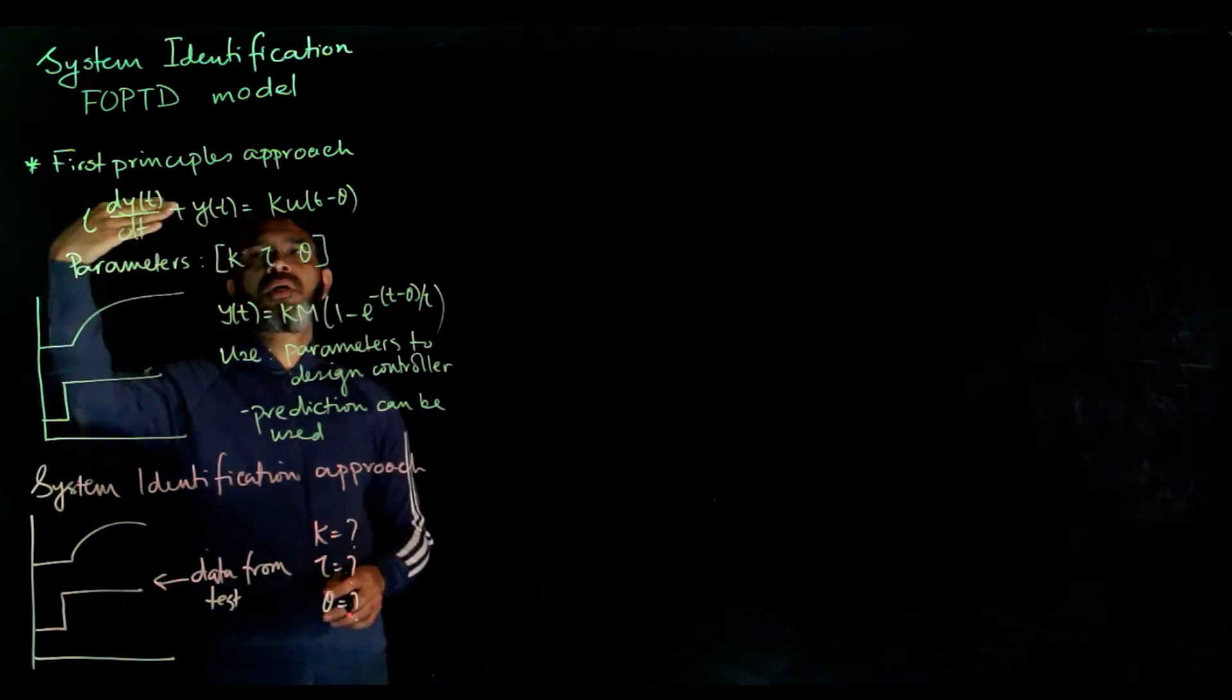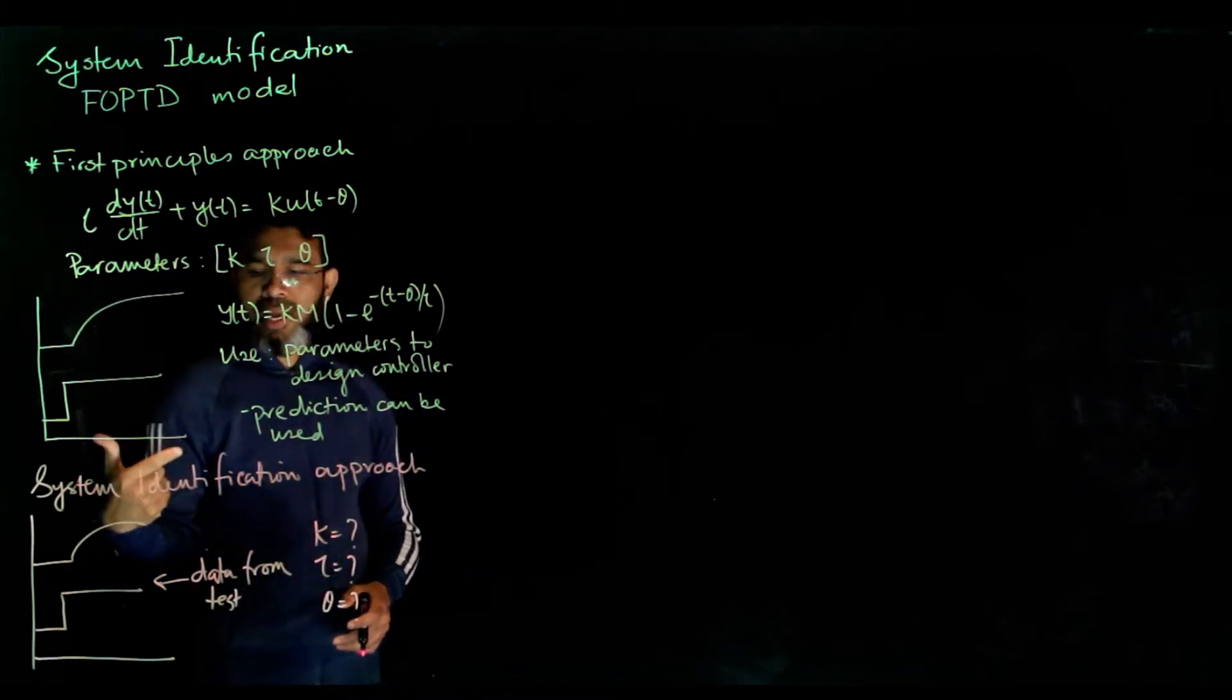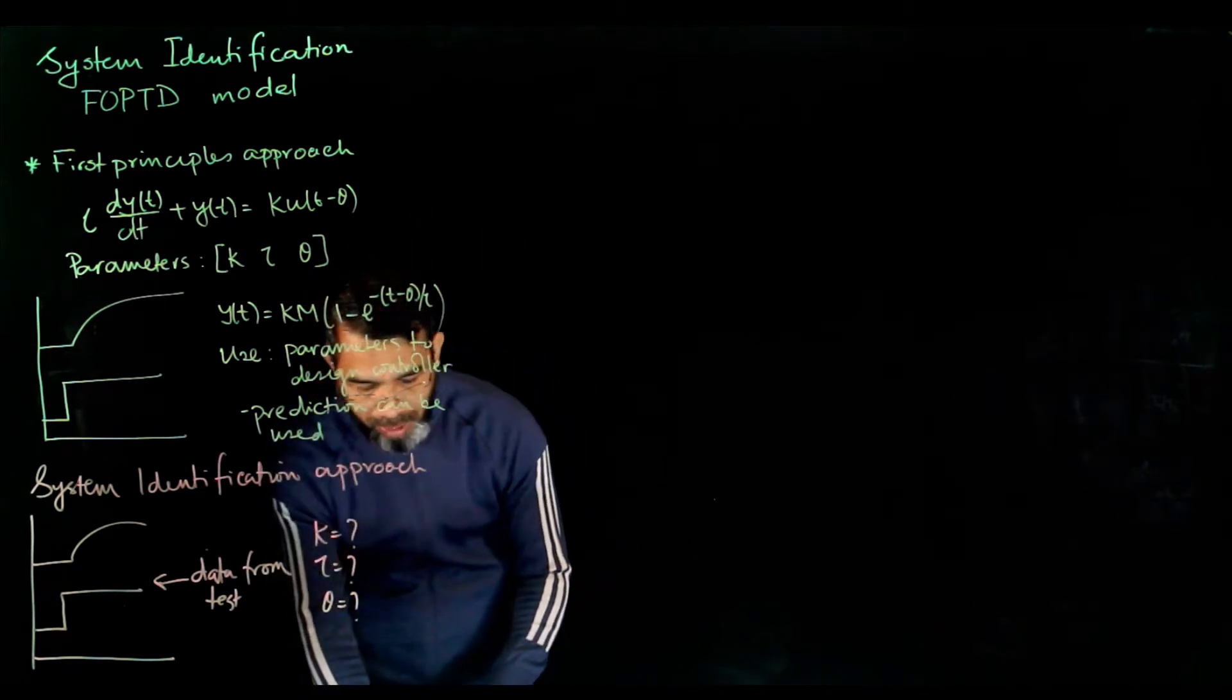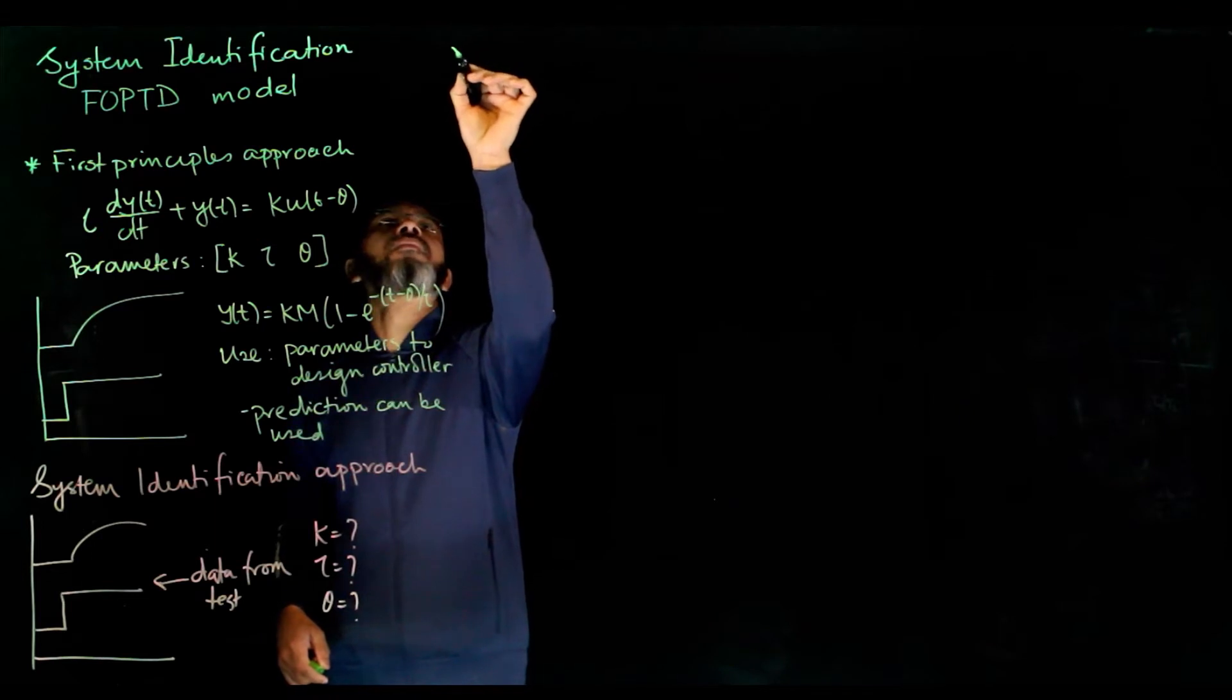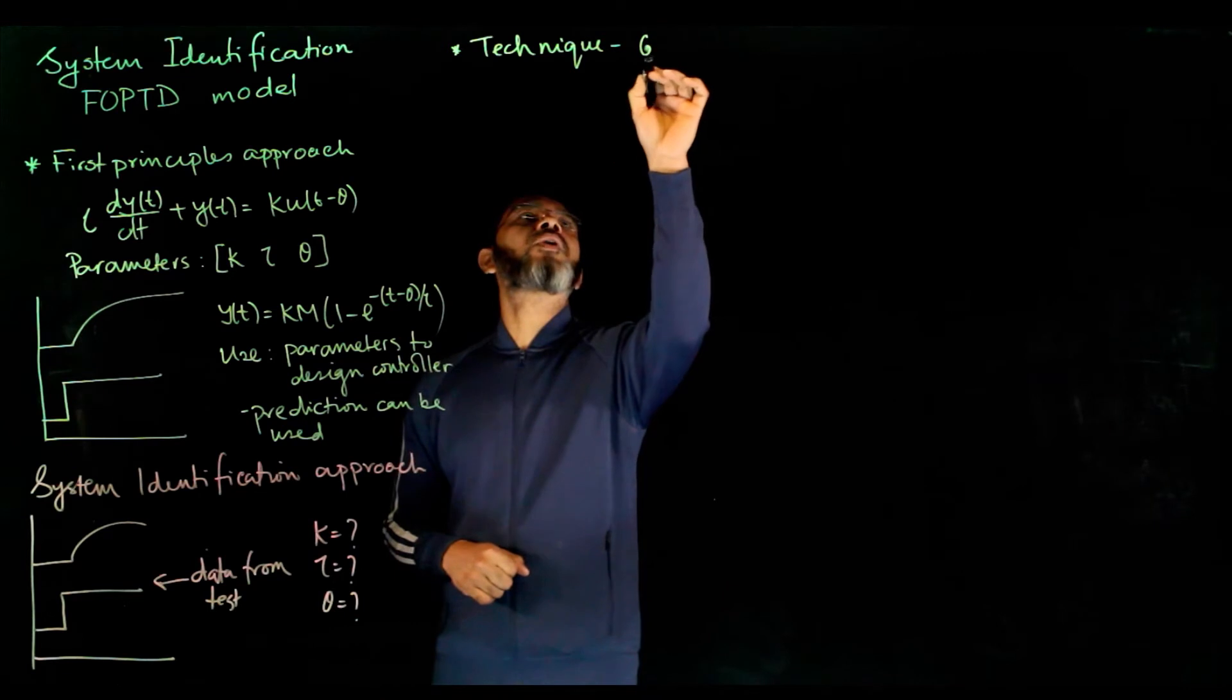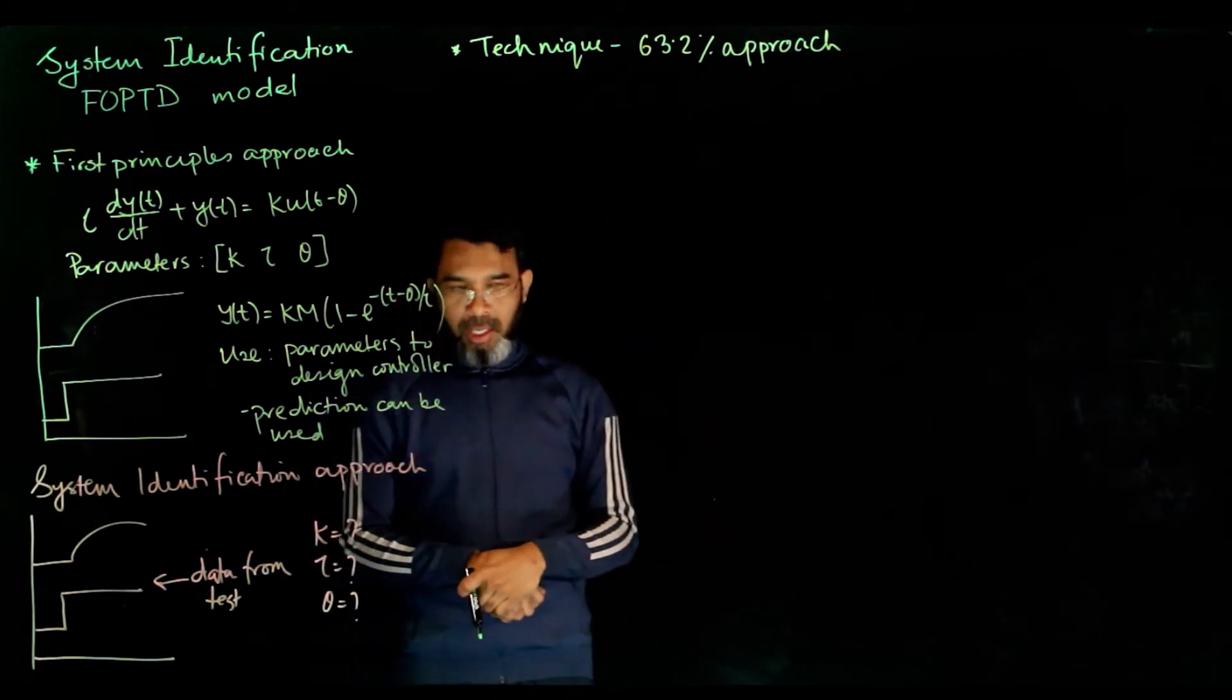If you do not have first principle knowledge, or the model we obtain from the first order process is complicated, then what about this approach where we have some data, and from the data, can we get these parameters? That is the system identification approach. We will look at a couple approaches for first order plus time delay model. One technique we will be using is called the 63.2% approach.